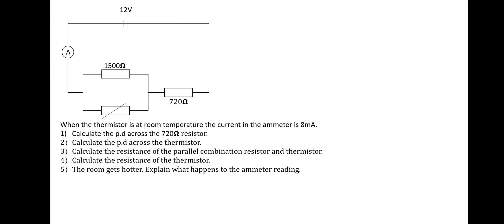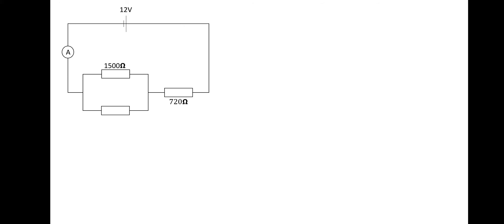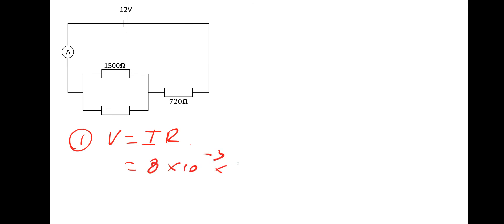Final question: with the thermistor at room temperature and the ammeter reading 8 milliamps, calculate the PD across the 720-ohm resistor. Using V = IR: 8 × 10⁻³ × 720 = 5.76 volts across the 720-ohm resistor.